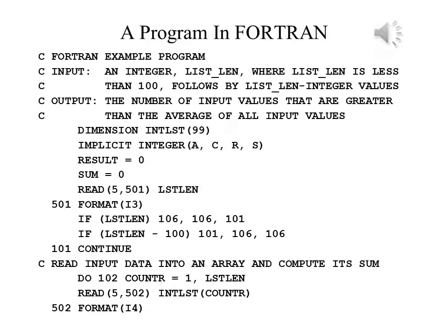The number of the last statement included in the do loop on this slide is 102. If you needed to continue a statement on the next line, you simply placed a character in column 6 — it could be any character, although most programmers develop their own styles for this.